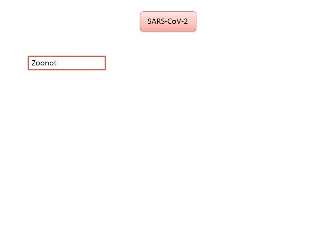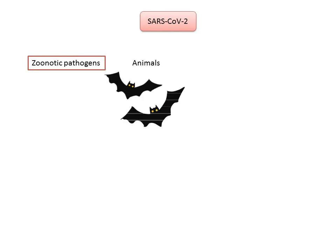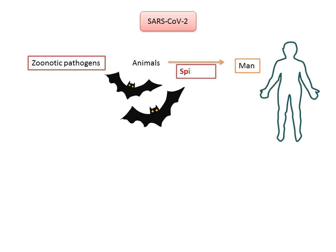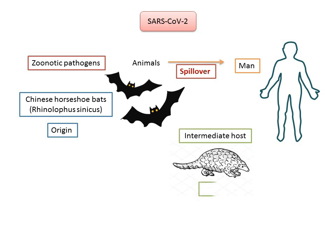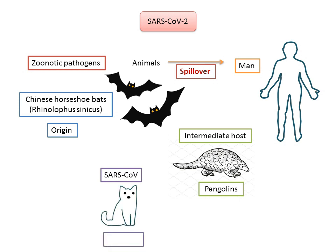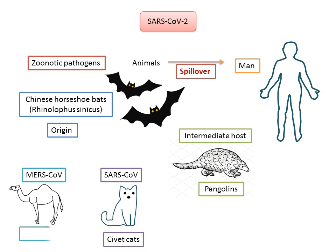SARS-CoV-2 is a zoonotic pathogen — that is, it spreads from animal to man. The virus jumps from animals to humans, which is termed as spillover, due to mutation of the virus on increased contact with animals. The Chinese horseshoe bat, that is rhinolophus sinicus, is the most probable origin, and pangolins are most likely the intermediate host, with humans being the definitive host. In the case of SARS-CoV, civet cats were found to be the intermediate host, and in MERS-CoV, it was found to be associated with camels.